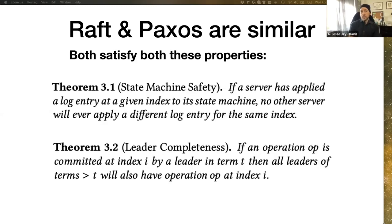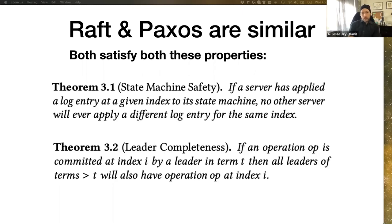Raft and Paxos both satisfy these two core properties. Number one: if a server has applied a log entry at a given index to its state machine, no other server will ever apply a different log entry for the same index — that's what we mean by consensus. And also, if an operation is committed at index I by a leader in term T, then all leaders after it will also have that operation at index I. So once you make a decision, you do not lose it. They both solve the same problems given unreliable individual servers and an unreliable network, and they come up with very similar answers.